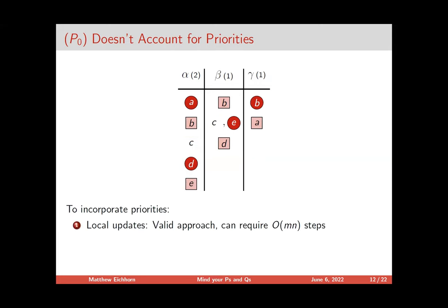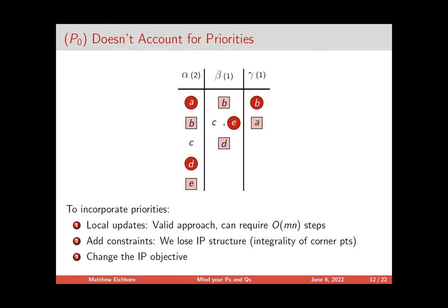How do we fix that? Three suggestions. First, run an iterative scheme to make local corrections — move allocations upward in priority — but you can construct examples where it cycles and requires order-MN iterations, giving an even slower algorithm. Second, add more constraints, since all priorities are encodable as linear constraints, but this loses the nice matching structure and integrality of corner points, and it's unclear there's an efficient way to solve the resulting integer program. So really the only remaining option is to change the objective.